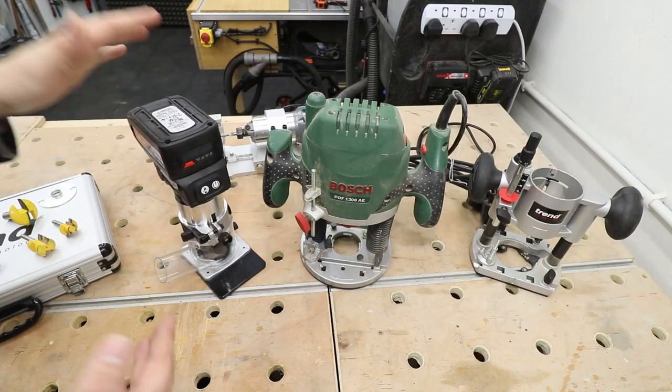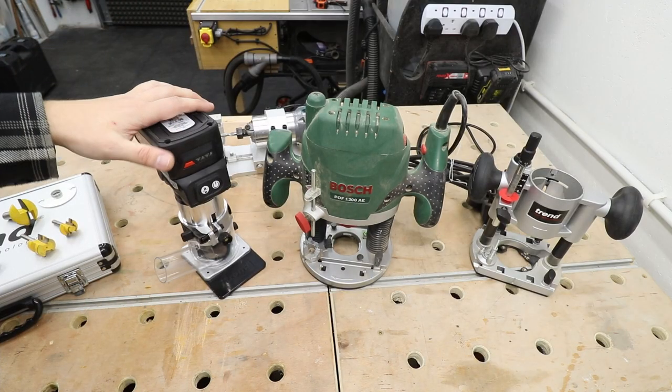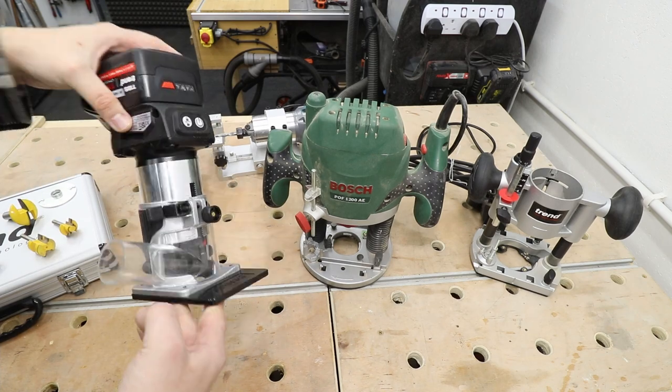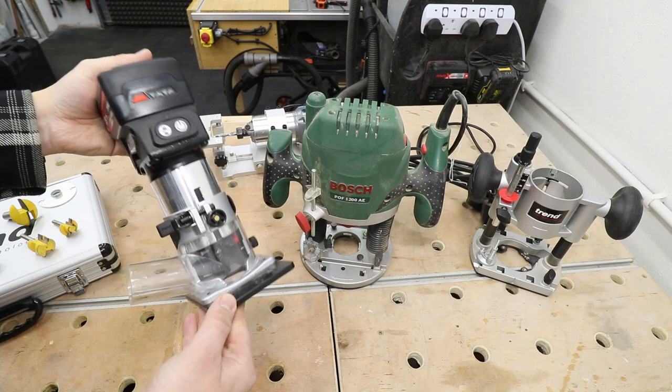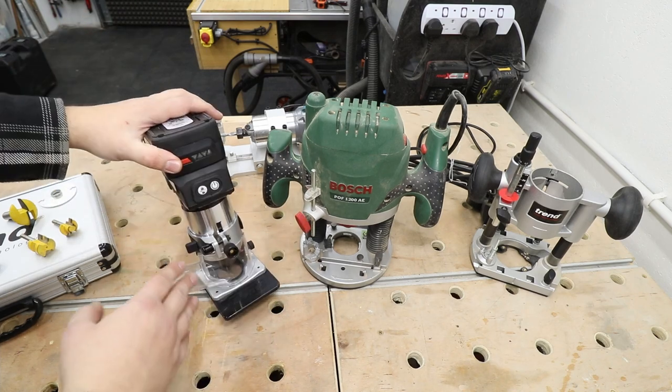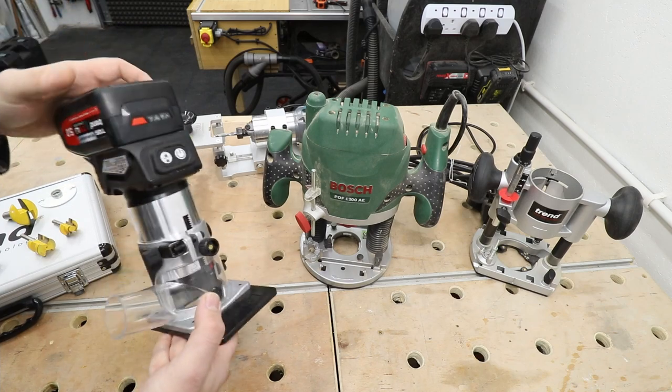Currently on the market you'll find two most common types of routers. First one is a fixed base like this one. Sometimes they are referred to as trim routers and they are less powerful, although these will tackle about 80 percent of the jobs you will have for a router.